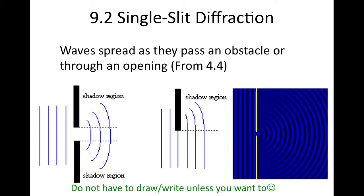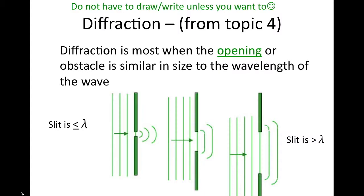In 4.4 we were introduced to single slit diffraction. We know that it is a phenomenon where waves spread as they pass through an opening or as the wave passes around an obstacle. We covered how the size of the barrier's slit or opening that the wave passes through can affect the amount of diffraction the wave undergoes.